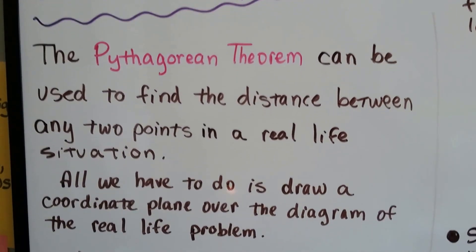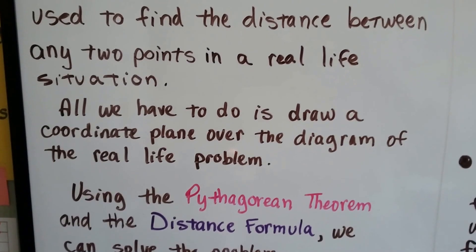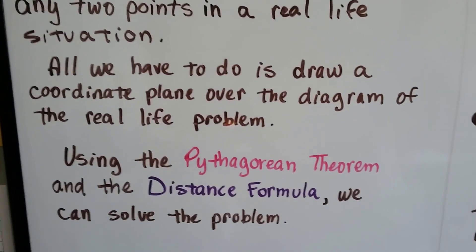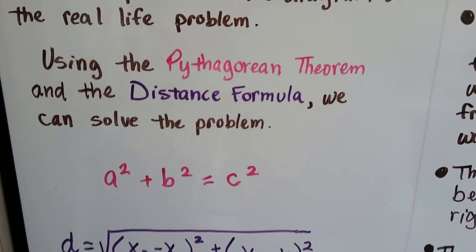The Pythagorean theorem can be used to find the distance between any two points in a real-life situation. All we have to do is draw a coordinate plane over the diagram of the real-life problem. Using the Pythagorean theorem and the distance formula, we can solve the problem.